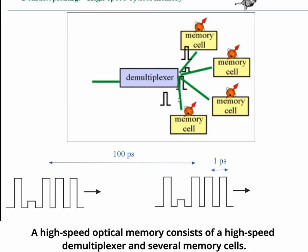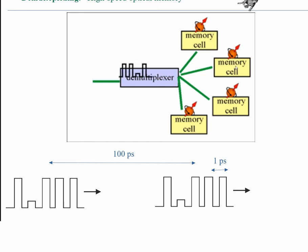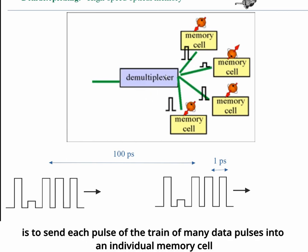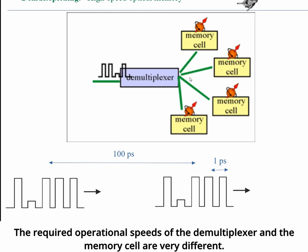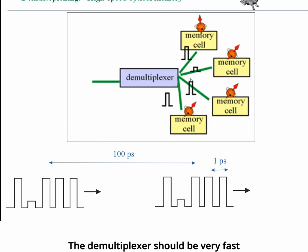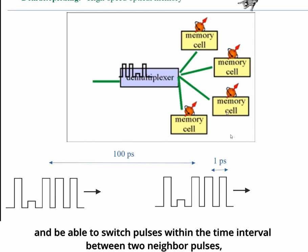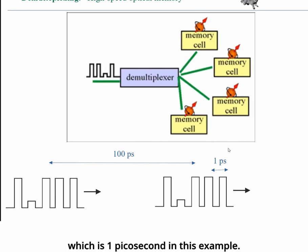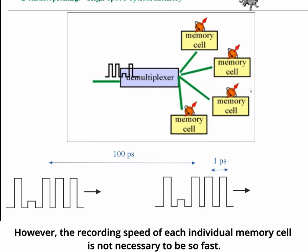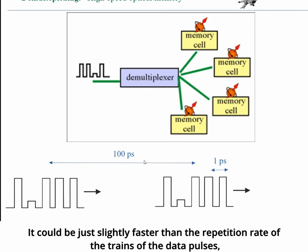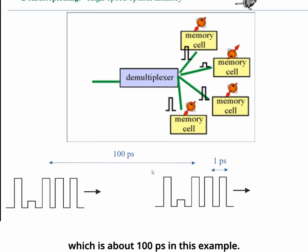Optical memory consists of a high-speed demultiplexer and several memory cells. The task of the demultiplexer is to send each pulse from a chain of many data pulses into an individual memory cell, ensuring that other pulses have no effect on that cell. The required operational speeds of the demultiplexer and memory cell are very different. The demultiplexer must be very fast and switch pulses within the time interval between two neighboring pulses — one picosecond in this example. However, the recording speed of each individual memory cell need not be so fast; it could be just slightly faster than the repetition rate of the chains of data pulses, which is about 100 picoseconds in this example.